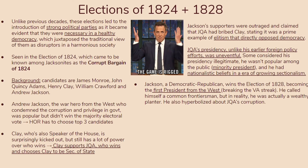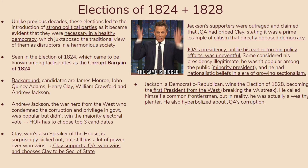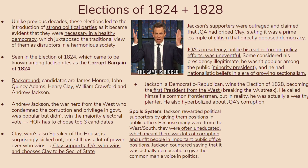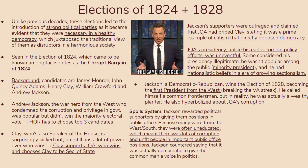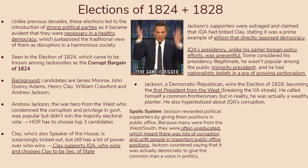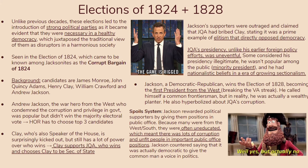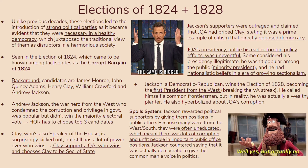One example of Jackson's corruption is the spoils system, where Jackson rewarded political supporters by giving them positions in public office. Because many of them were from the West, they were often uneducated, which meant there was a lot of corruption and unfit people in important public office positions. Jackson countered by saying it was actually democratic to give the common man a voice in politics — and while everyone should have a voice, this approach didn't help the democratic system, as unfit people make unfit decisions.